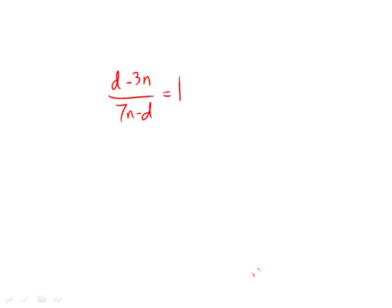Whenever we have something, in this case up here in the numerator, divided by something else in the denominator, and it's equal to 1, we can simply set these two equal to each other. Or think of it this way, 7n minus d times 1, cross-multiplying, is simply going to be 7n minus d.